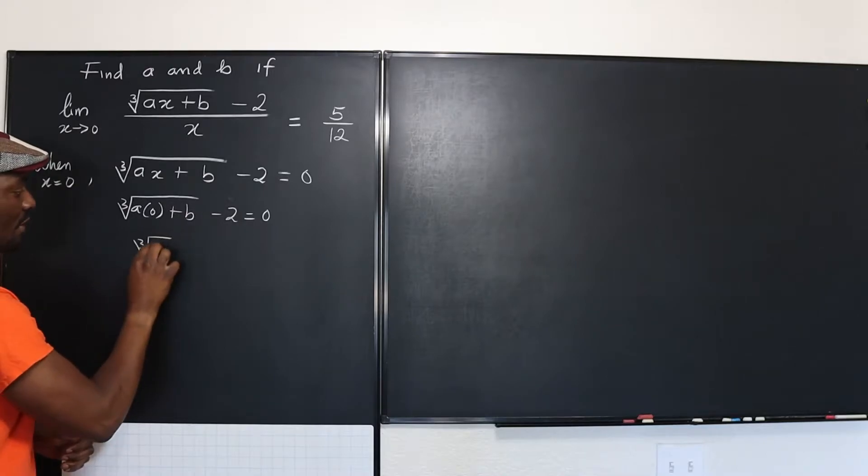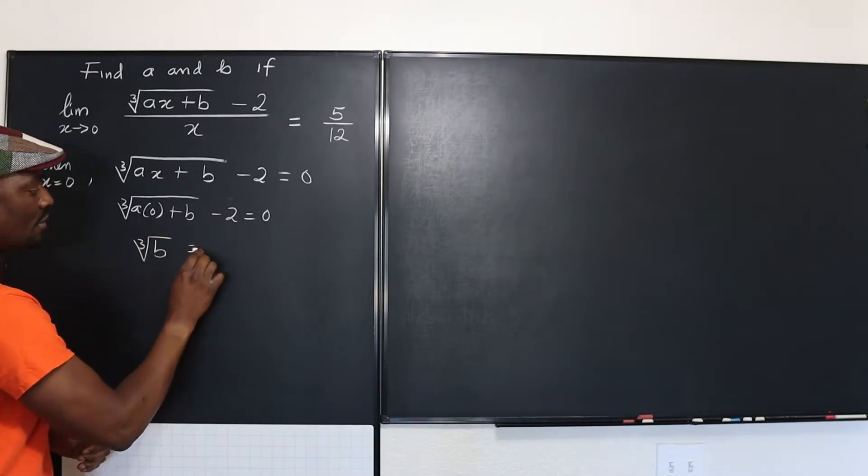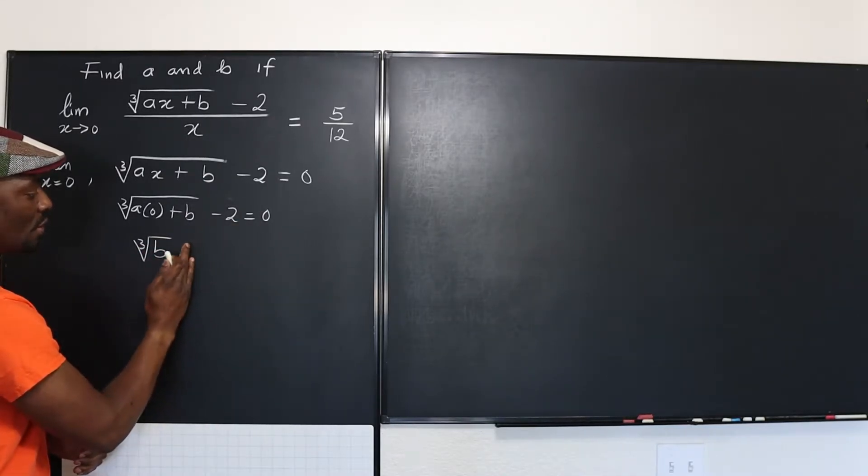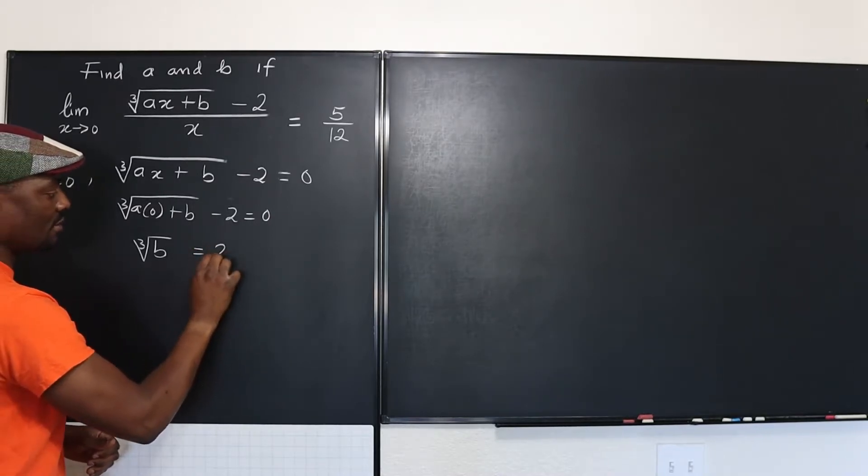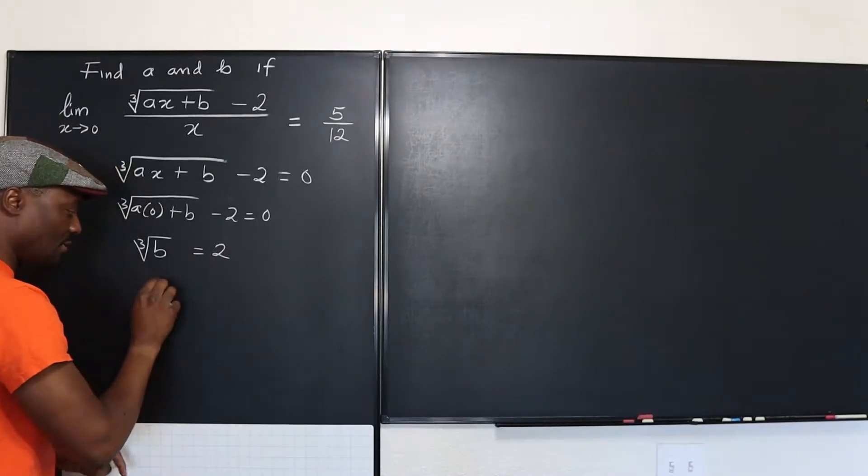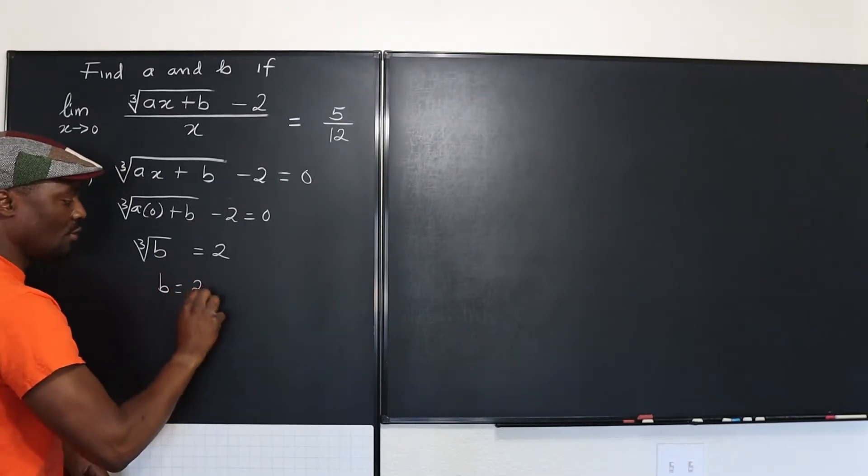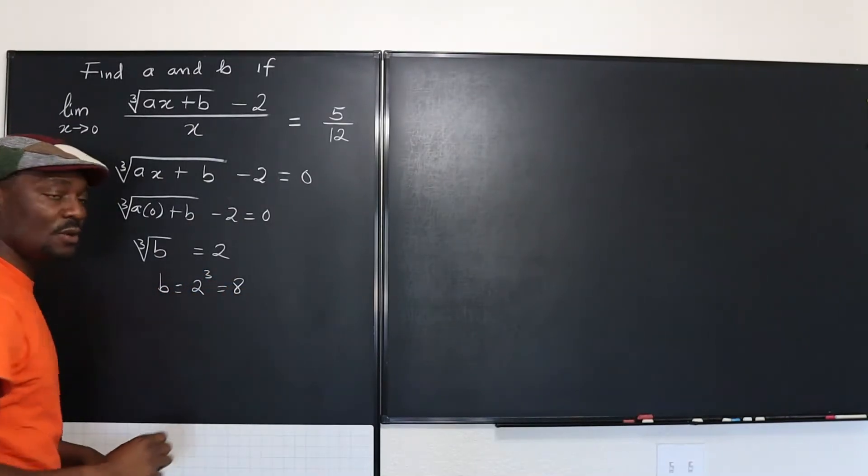So that tells you that the cube root of B equals, if this two goes over to that side, it's going to be two. The cube root of a number is two. That number must be eight. So B is two to the third, which is equal to eight.